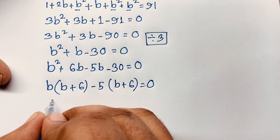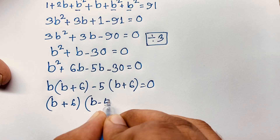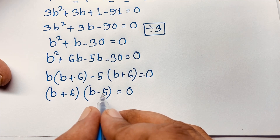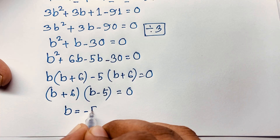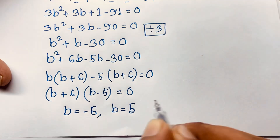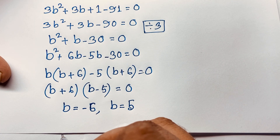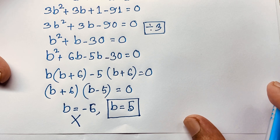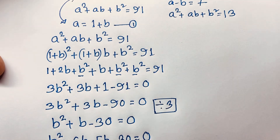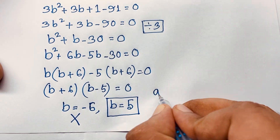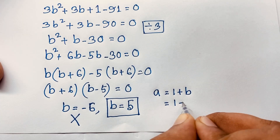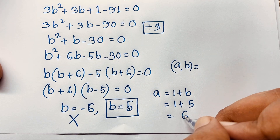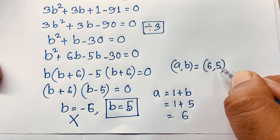Factoring out (b plus 6) gives (b minus 5)(b plus 6) equals 0. So b equals negative 6 or b equals positive 5. Since a and b must be positive integers, b equals negative 6 is not possible. Therefore b equals 5, and from a equals 1 plus b, we get a equals 6.